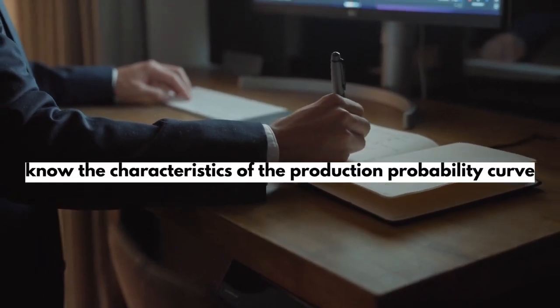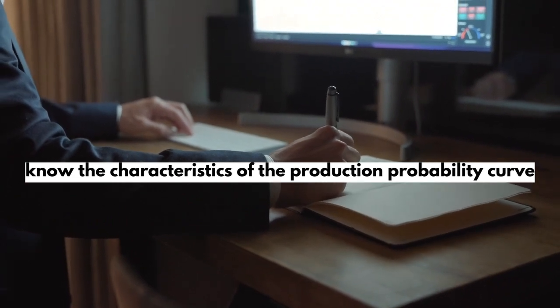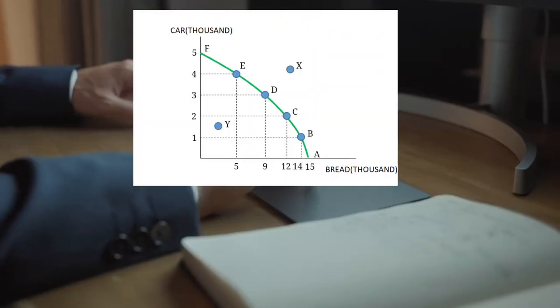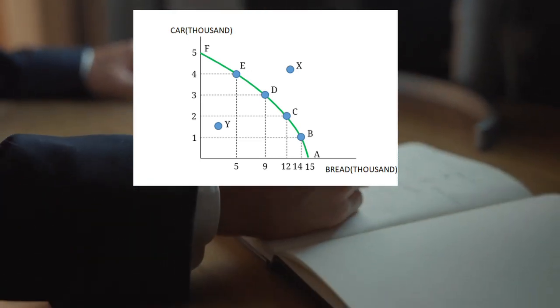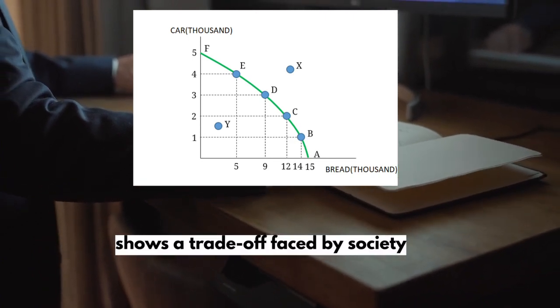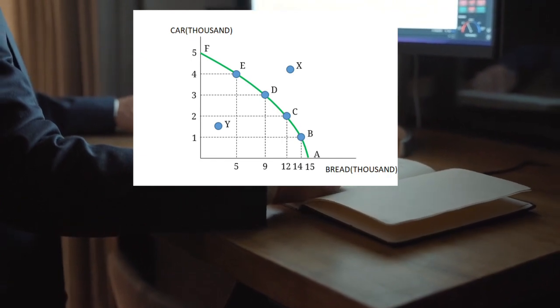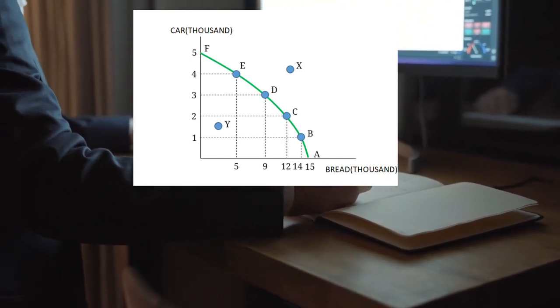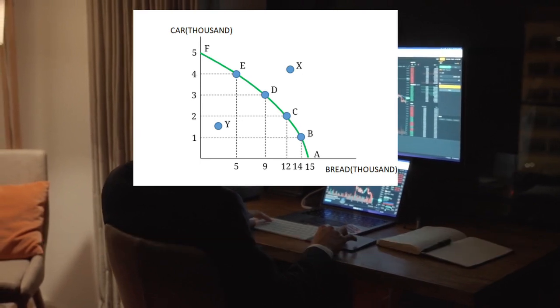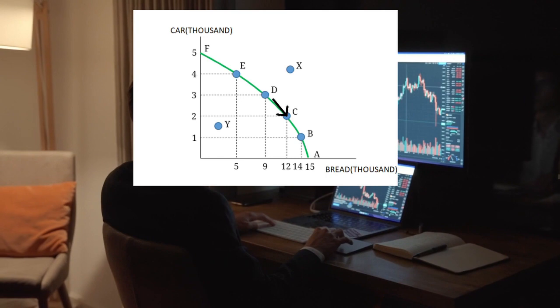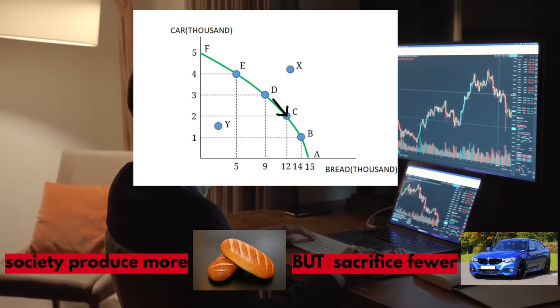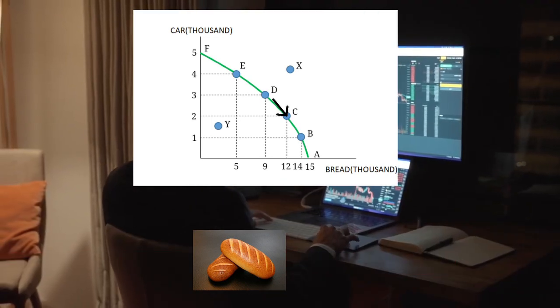Before we go to another explanation, first we have to know the characteristics of the production possibility curve. In economics, people are always facing trade-offs. So this production possibility curve shows the trade-offs faced by society. For example, when the economy reaches the efficient point at the limits of production capability, the addition of one item can be done only by reducing the other goods. When the economy moves from point D to point C, for example, society can produce more bread but at the sacrifice of producing fewer cars.